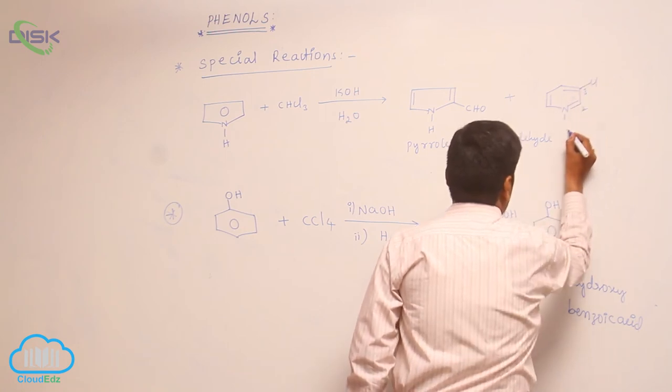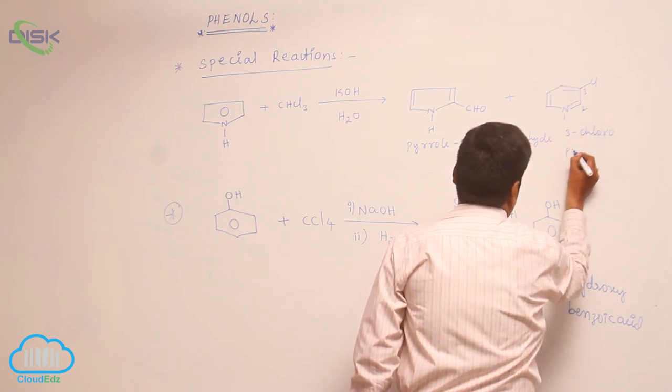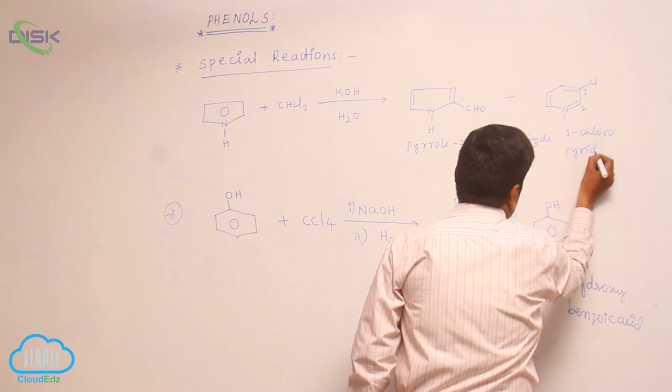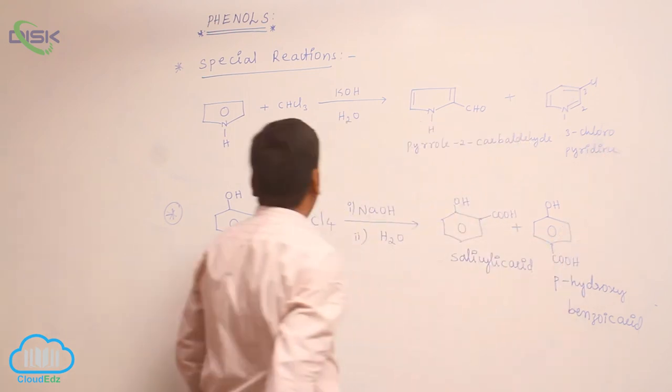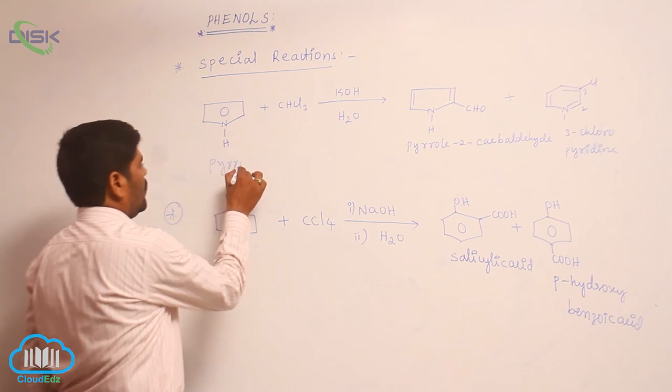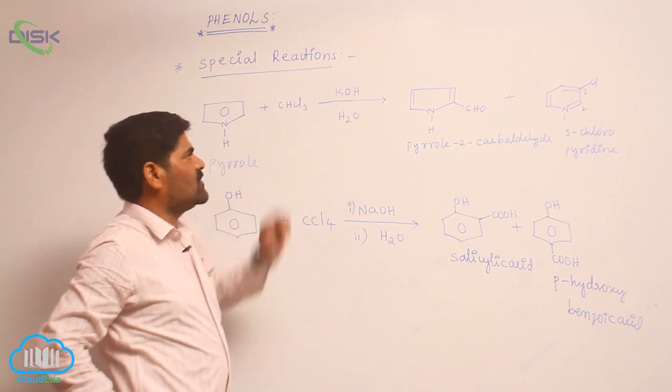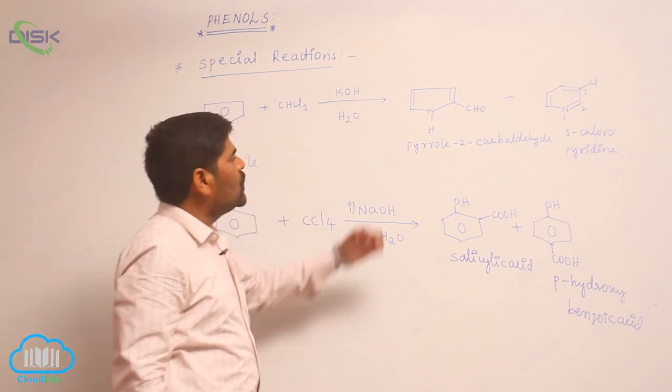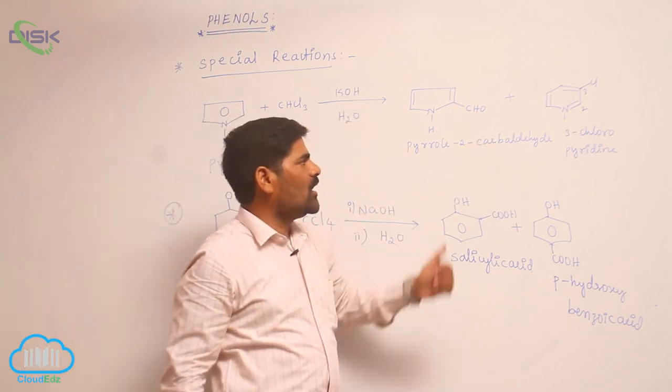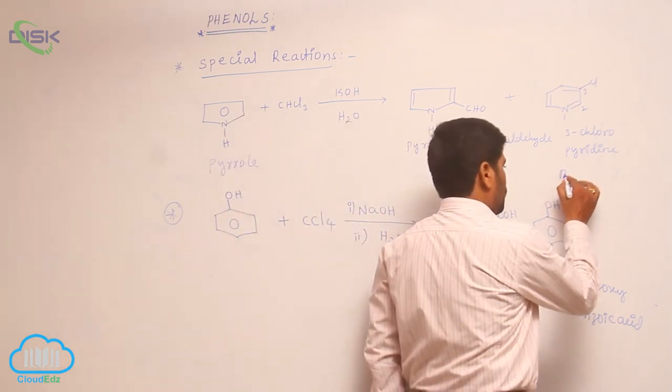This is known as 3-chloro-pyridine. When pyrrole reacts with chloroform in presence of aqueous potassium hydroxide to form pyrrole-2-carbaldehyde and 3-chloro-pyridine, this is a byproduct.